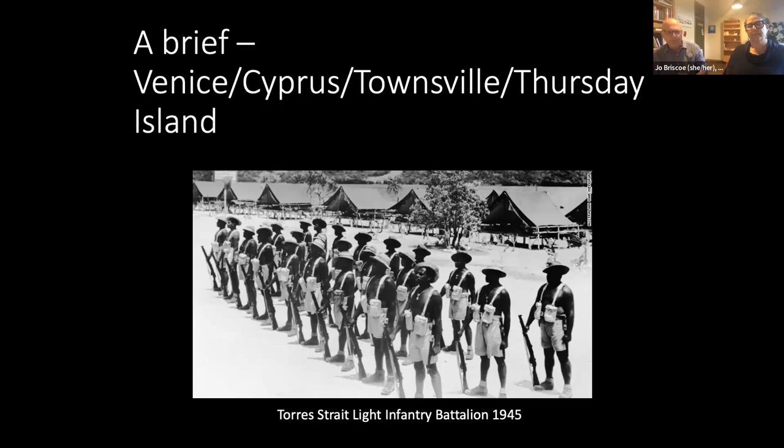Jimmy played the title role of Othello and much of the play was translated into the language of the Torres Strait Islanders. The original play is set in Venice and Cyprus; Jason's reconceptualization places it in Townsville and Thursday Island. The collision between those two things — and the one thing both settings share, Cyprus/Venice and the Torres Strait — is water.